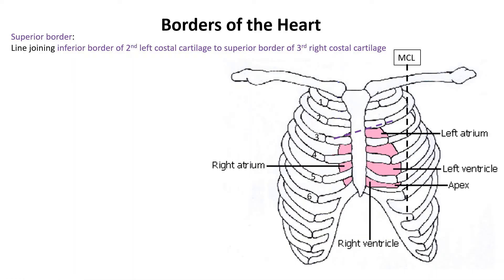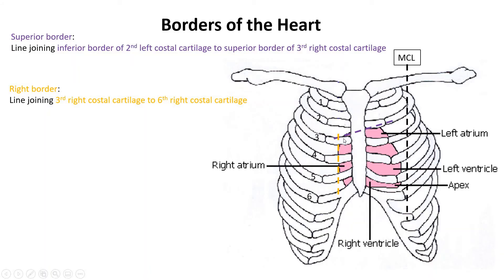For the right border, it starts at the third costal cartilage and goes all the way to the sixth costal cartilage on the right side. As mentioned, the right border is made entirely out of the right atrium.